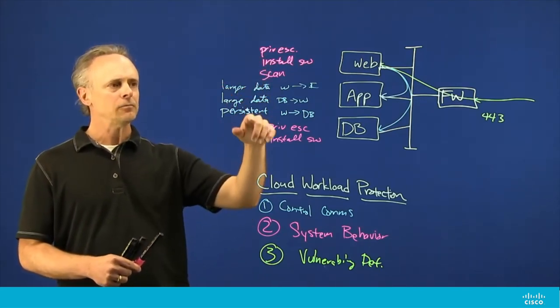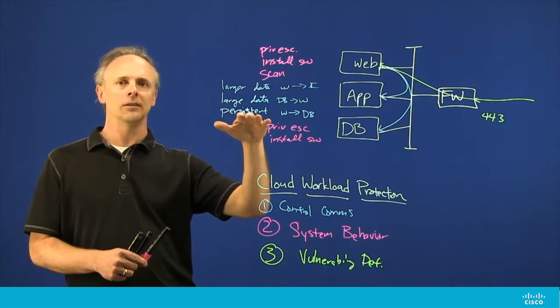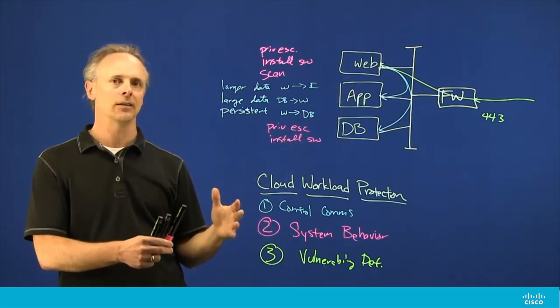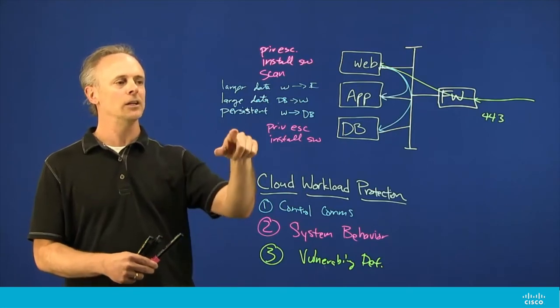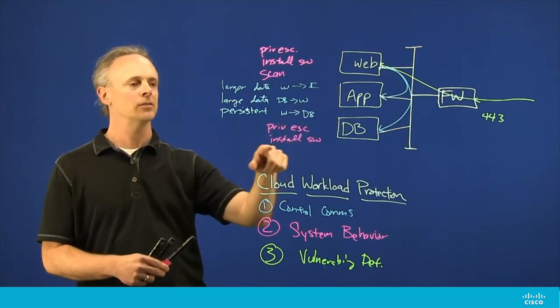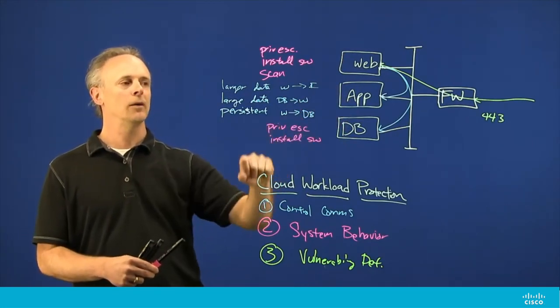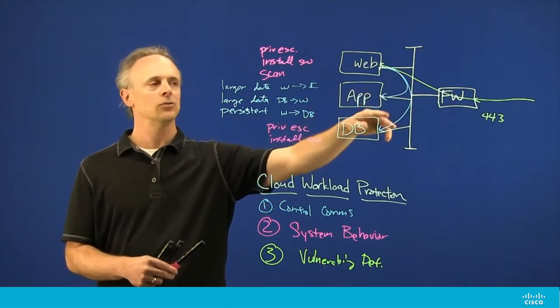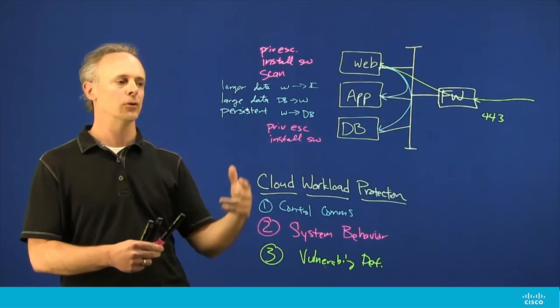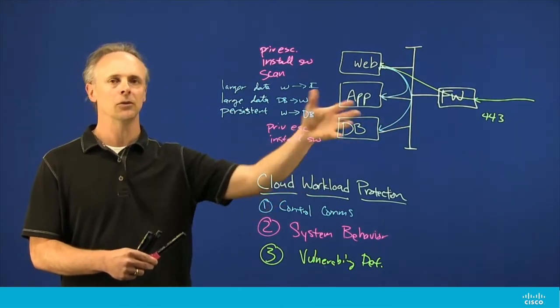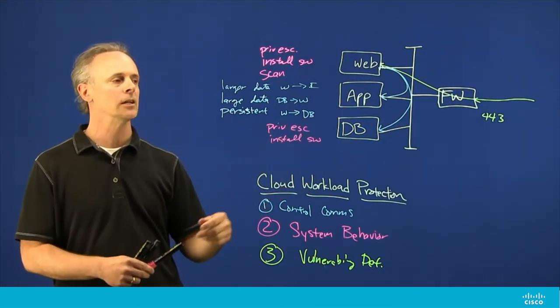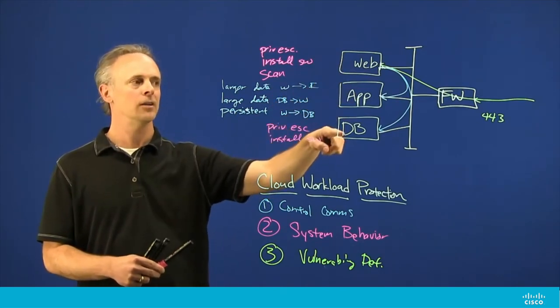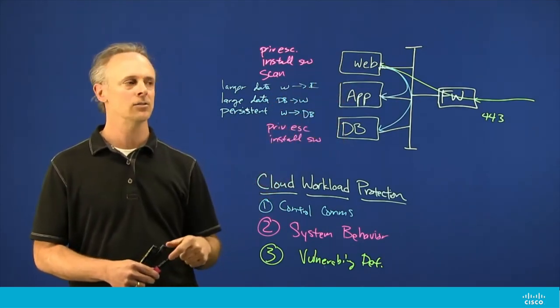Beyond that, we have the ability to go in and once we understand the application, which is one of the core functions that Tetration has, we can put the walls up to say okay, this connection from web to database should never actually happen. We can put up the walls through native enforcement or through policy export to do enforcement on some sort of network device. We can enforce the fact that the web should never be talking to the database unless it's actually going through the application tier.